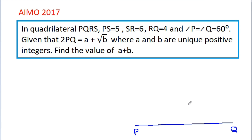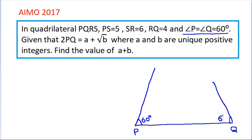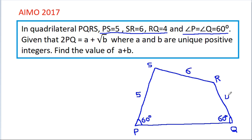So PQ: angle P is equal to angle Q, that is 60 degrees. Angle P is 60 degrees and angle Q is 60 degrees. PS is 5, SR is 6, and RQ is 4.